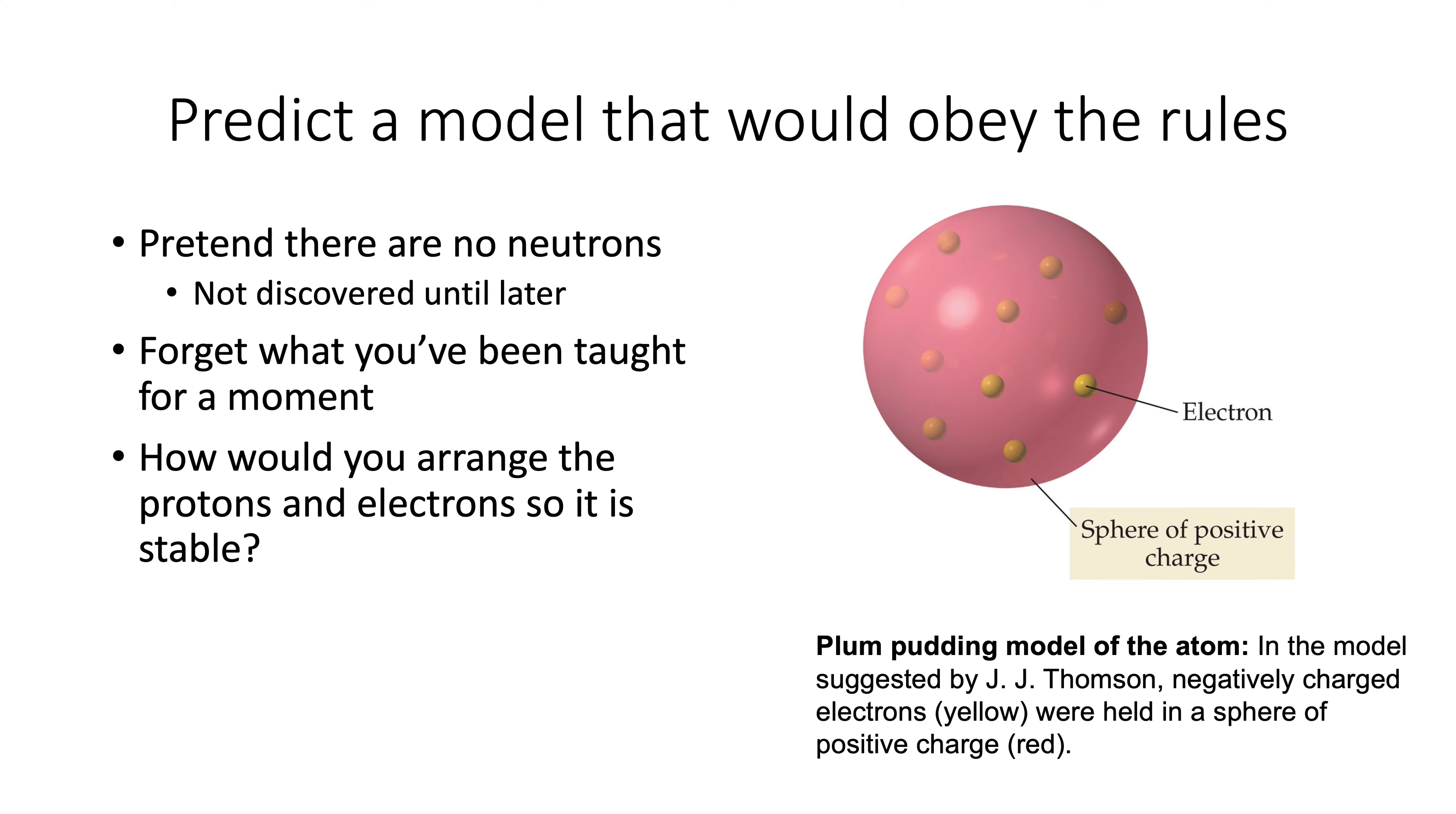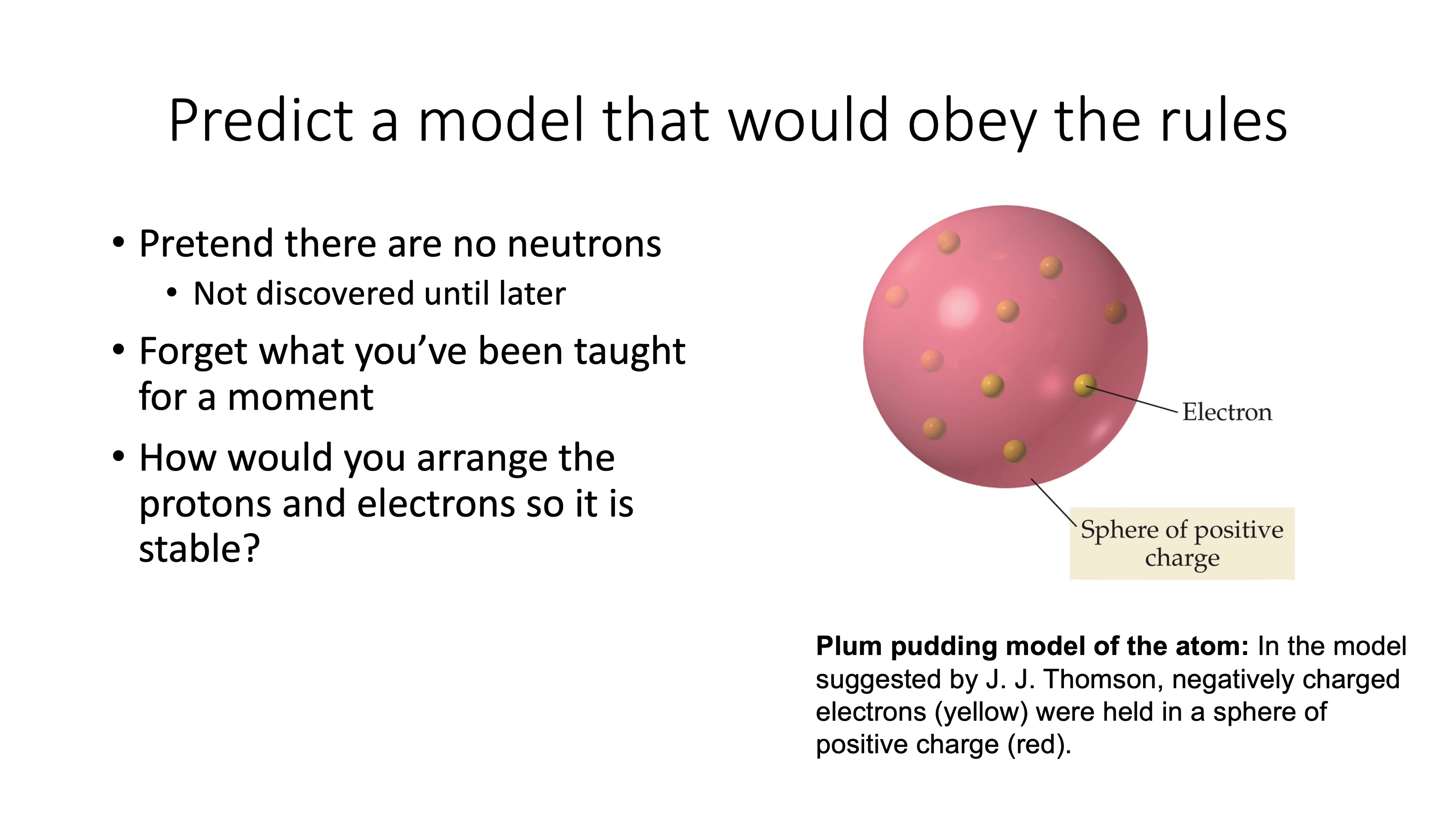So the next thing that happens when you have a hypothesis is you test it. And so Ernest Rutherford tested Thompson's theory, and so he set up this experiment to the right, took a source of alpha radiation. So we haven't talked about radiation much, but when atoms fall apart, they fall apart in patterns, and they spit out sometimes particles, and one of the particles they can spit out is called an alpha particle. It has this notation, so it's a 4, 2, 2 plus. Basically, it's two protons and two neutrons.